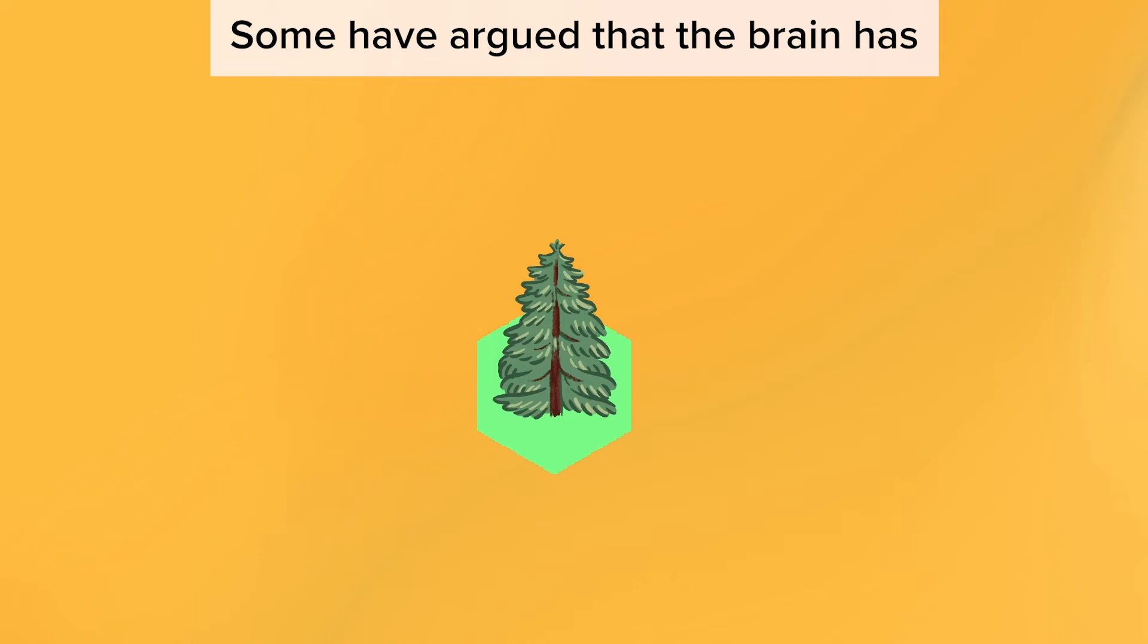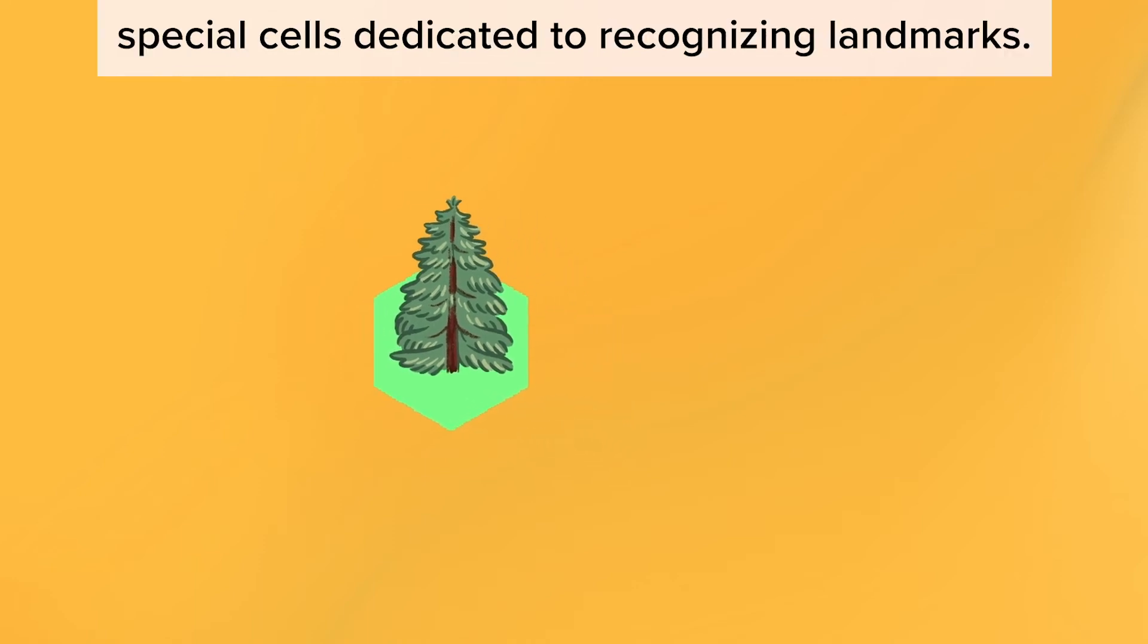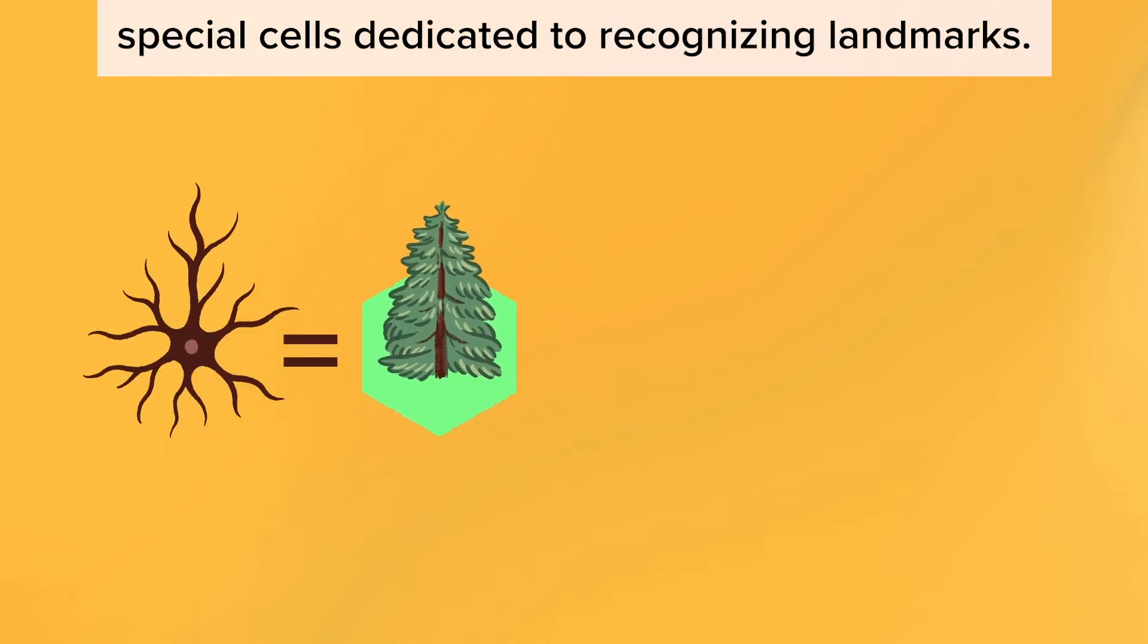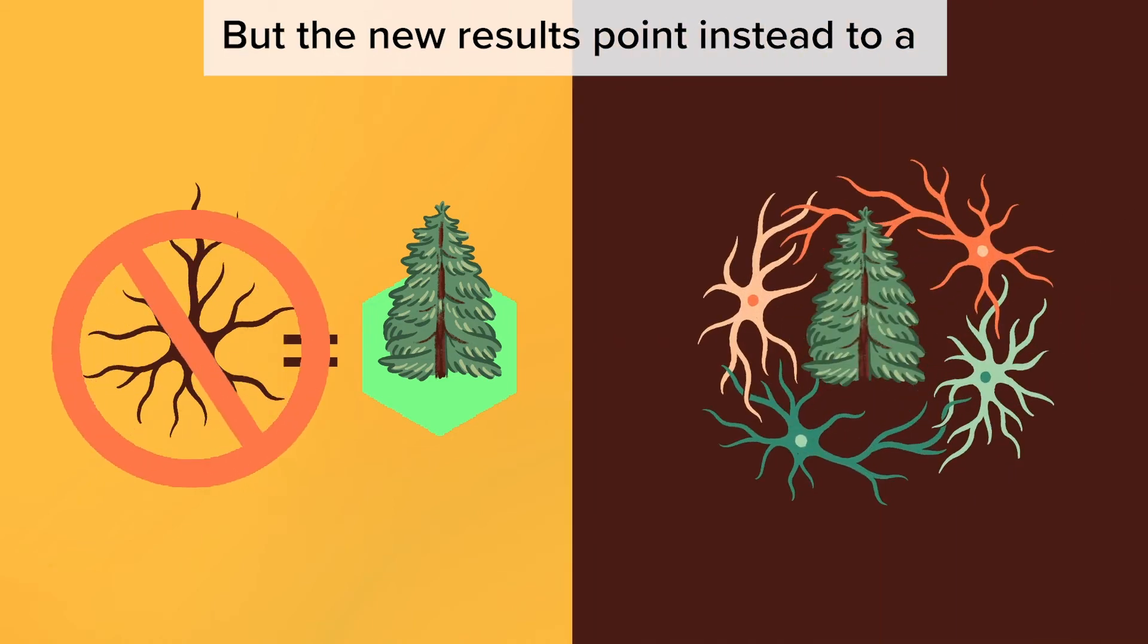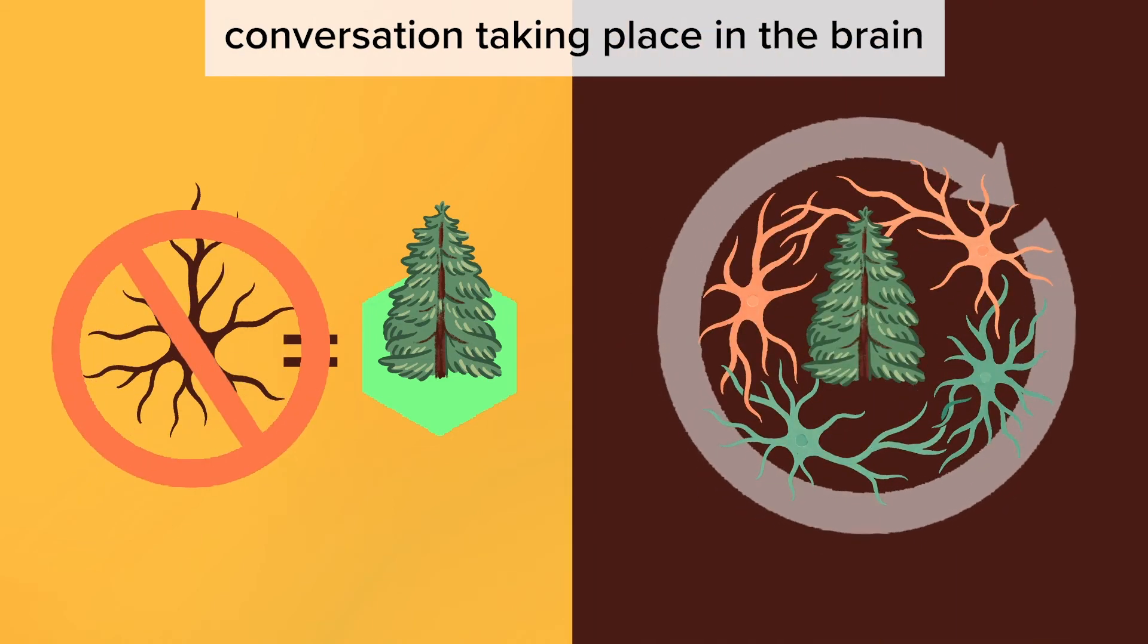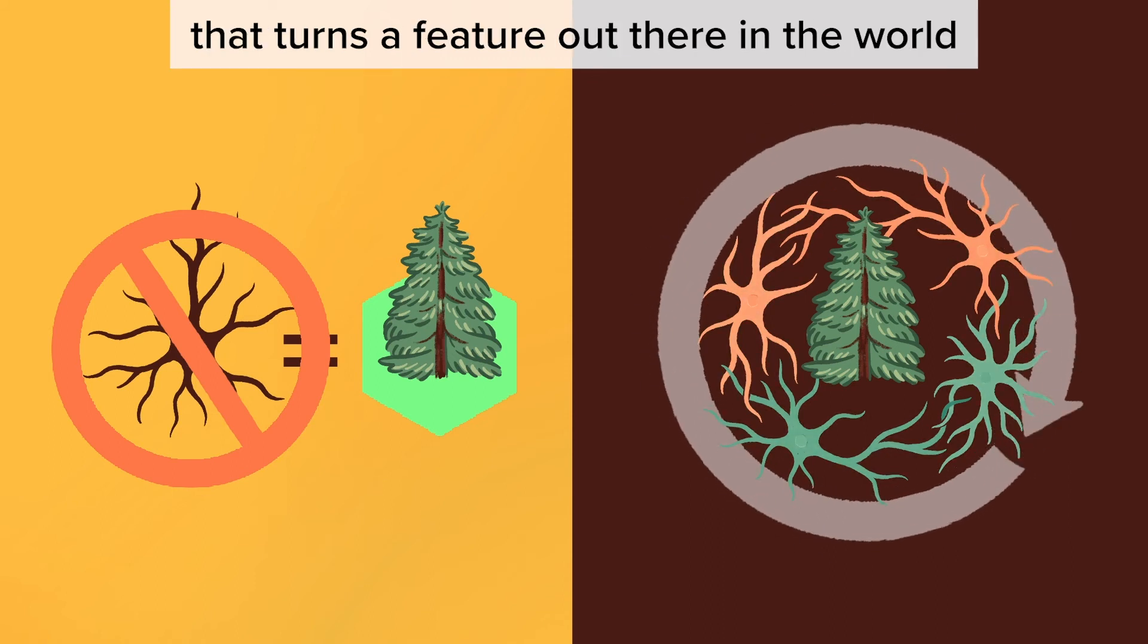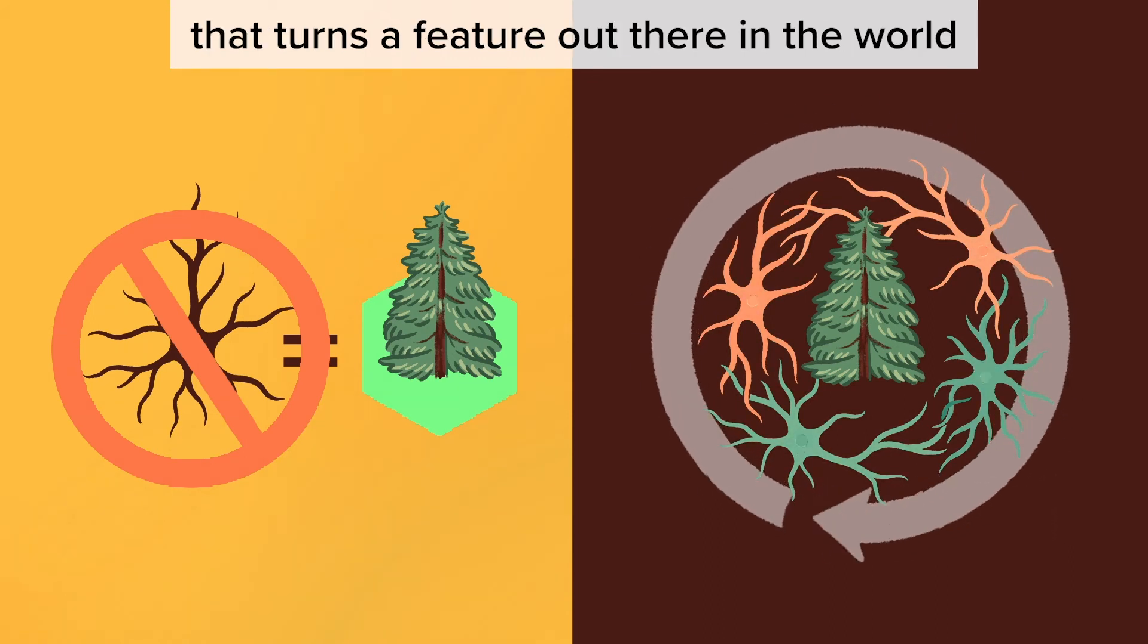Some have argued that the brain has special cells dedicated to recognizing landmarks. But the new results point instead to a conversation taking place in the brain that turns a feature out there in the world into a landmark.